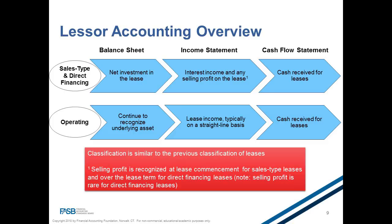For operating leases, the asset is kept on the books of the lessor and profits are recorded over time; initial direct costs are capitalized and expensed over time. For sales-type leases, assets are removed from the books and selling profits are immediately recognized as though the asset had been sold; initial direct costs are immediately expensed, and any retained interest is recorded as net investment in the lease receivable. Direct financing leases are similar to sales-type leases, except selling profits are booked over time, losses are booked immediately, and initial direct costs are capitalized as part of the net investment and expensed over time.